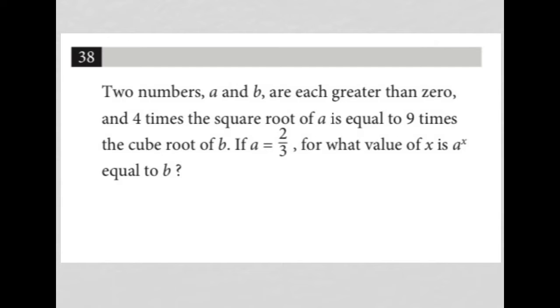So, this question says two numbers, A and B, are each greater than zero. So, A greater than zero, B greater than zero.